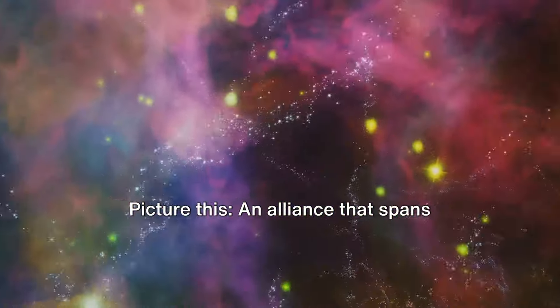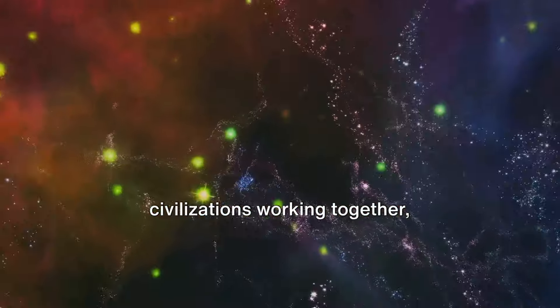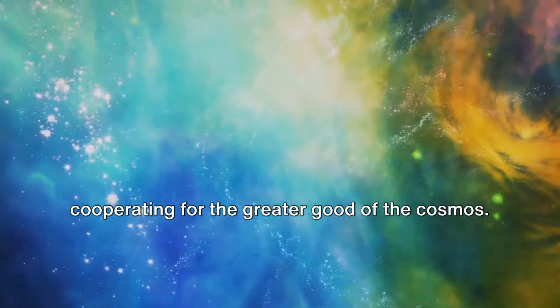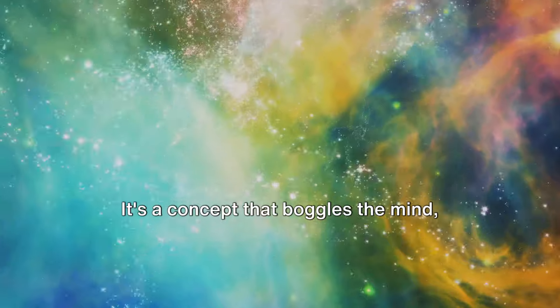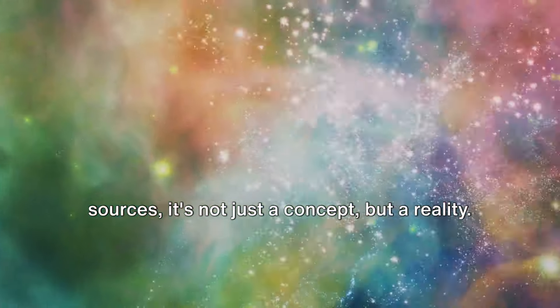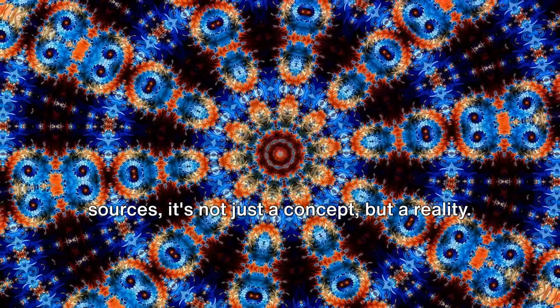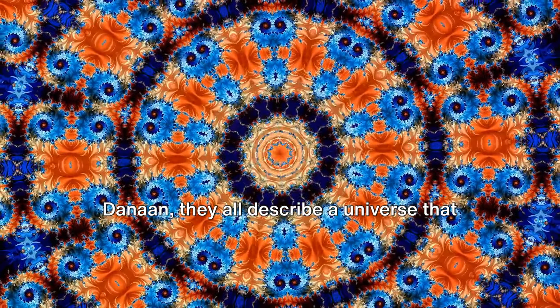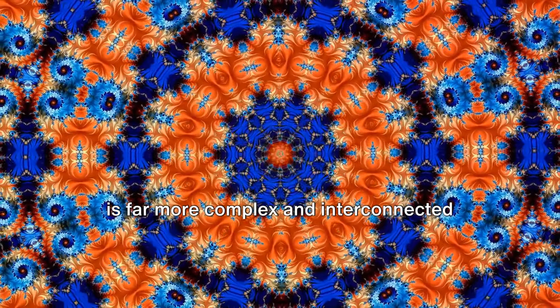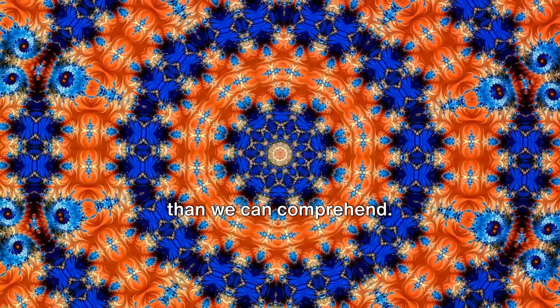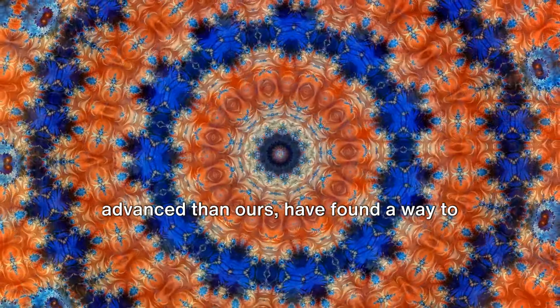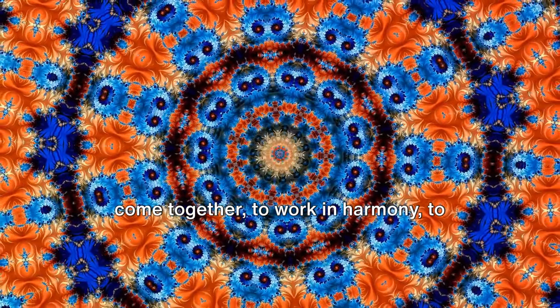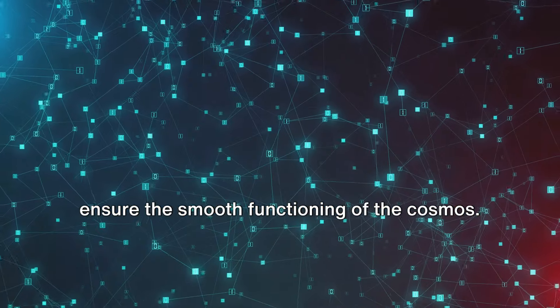Picture this, an alliance that spans across galaxies, with diverse civilizations working together, cooperating for the greater good of the cosmos. It's a concept that boggles the mind, isn't it? According to these esteemed sources, it's not just a concept, but a reality. Haim Eshed, Paul Hellyer, and Elena Danon, they all describe a universe that is far more complex and interconnected than we can comprehend. A universe where civilizations far advanced than ours have found a way to come together, to work in harmony, to ensure the smooth functioning of the cosmos.